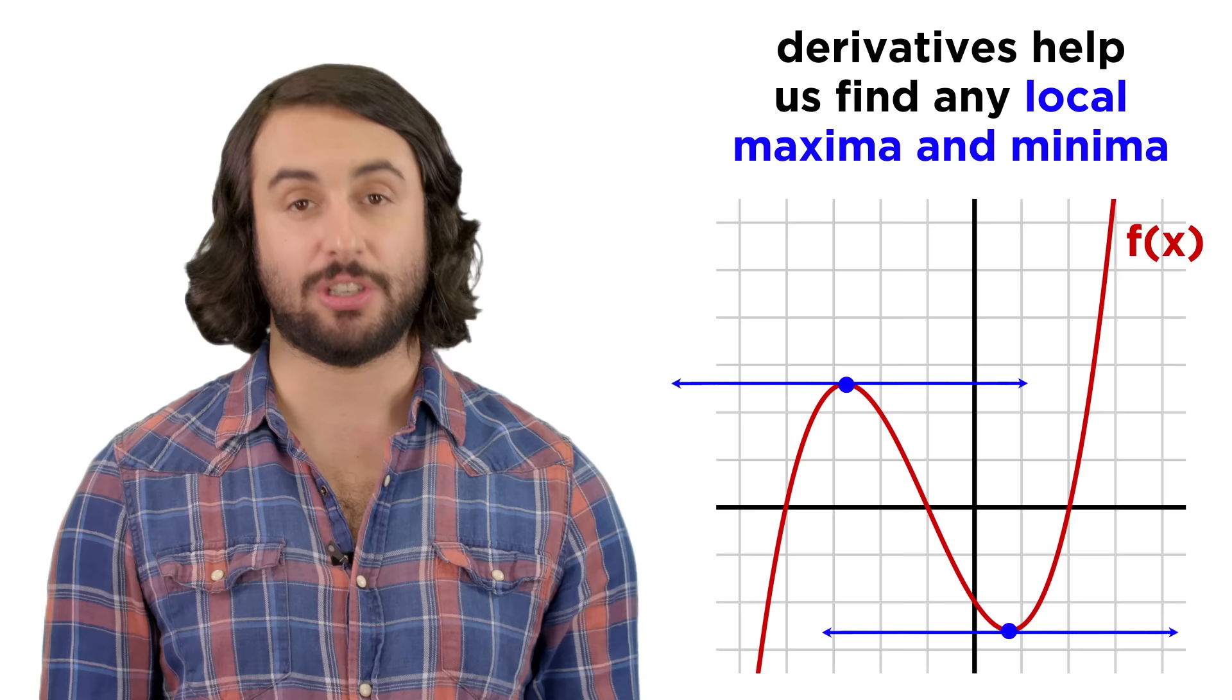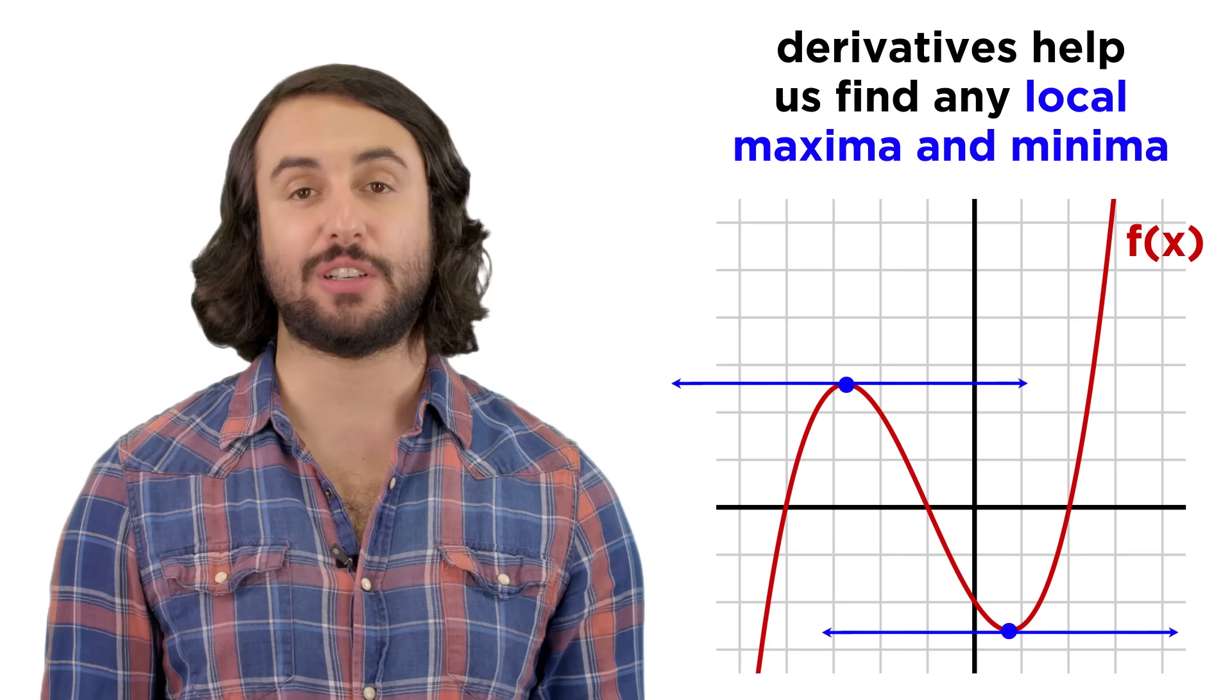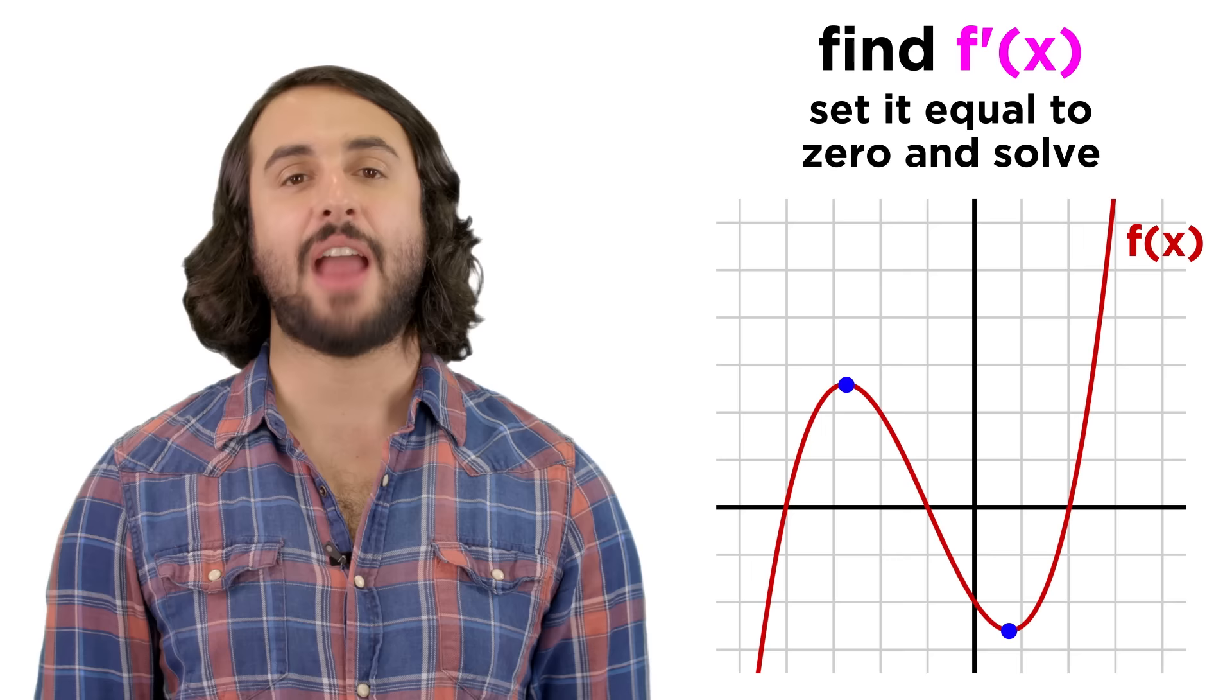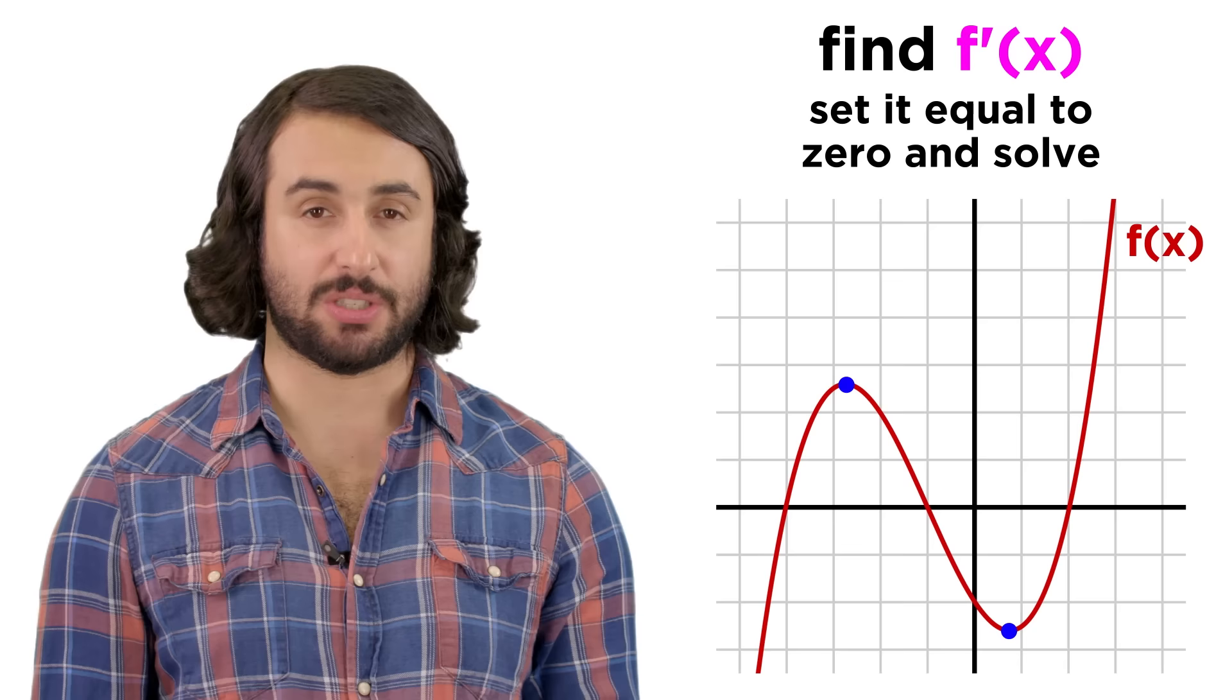Let's recall that if a derivative can be interpreted as the slope of a tangent line, and the tangent line at any maximum or minimum must be perfectly horizontal, then the derivative of a function at any of these points must equal zero. So to find them, all we need to do is take the derivative and find the zeros of the derivative.